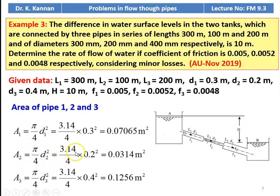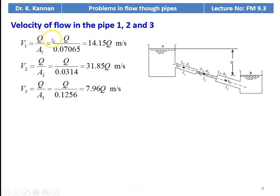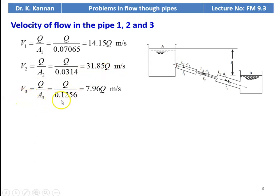A2 = π/4 × 0.2² = 0.0314 m². A3 = π/4 × 0.4² = 0.1256 m². Velocities: V1 = Q/A1 = Q/0.07065 = 14.15Q m/s; V2 = Q/A2 = Q/0.0314 = 31.85Q m/s; V3 = Q/A3 = Q/0.1256 = 7.96Q m/s.